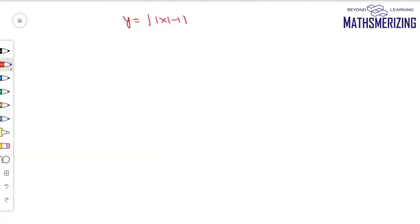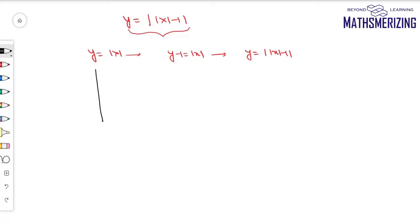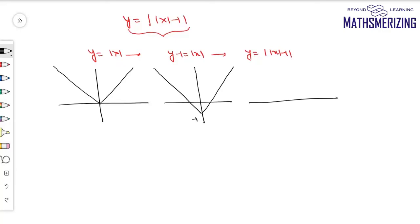Now draw y = ||x| - 1|. There are two ways. The first way: draw y = |x|, then shift the graph down 1 unit to get y - 1 = |x|, and then apply mod of f(x): take the reflection of the lower part upward, then erase the graph from the third and fourth quadrant. The graph of ||x| - 1| ends up as a W shape.